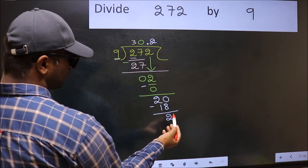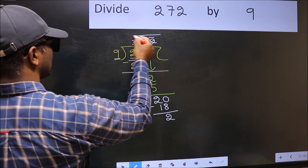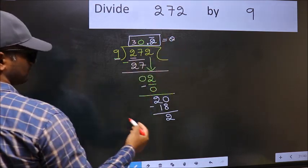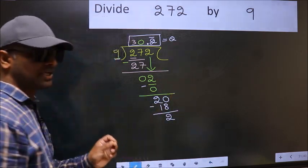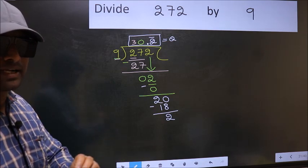We got 2 again. That means we get a bar on this number. So this is our quotient. Did you understand where the mistake happens? You should not make that mistake.